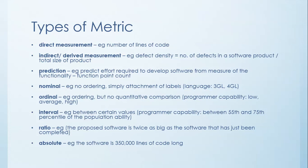The next type is ordinal where there is ordering but there's no quantitative comparison. So for example, programmer capability. You could have orders of low capability, average capability, high capability and we could measure that.